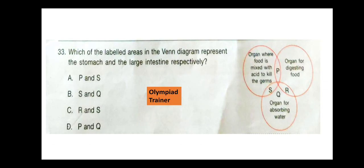Question 33. Which of the labelled areas in the Venn diagram represent the stomach and the large intestine respectively? The correct answer is option D — P and Q.